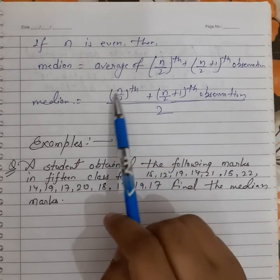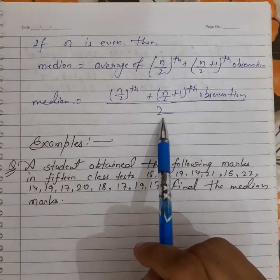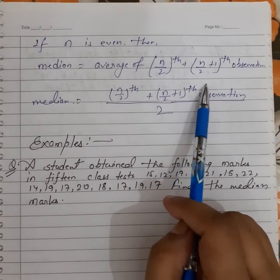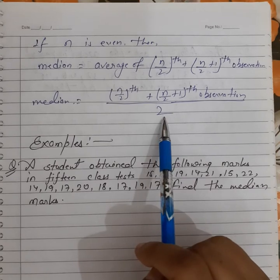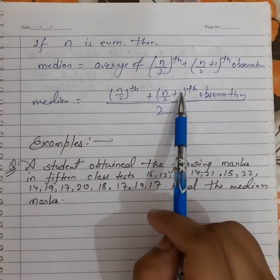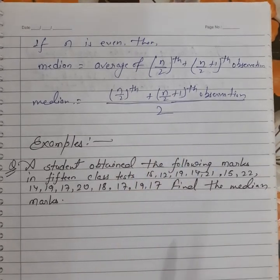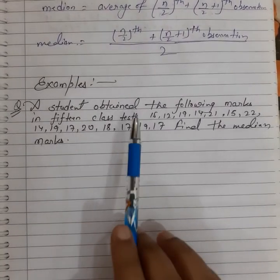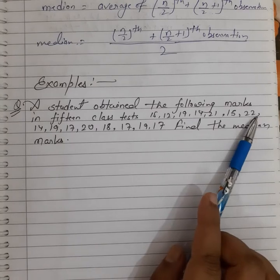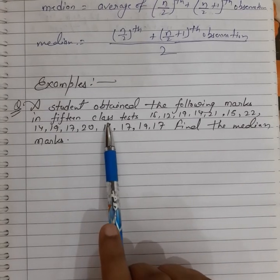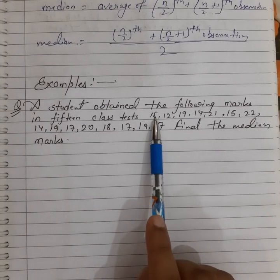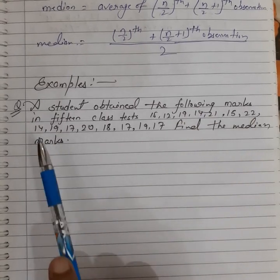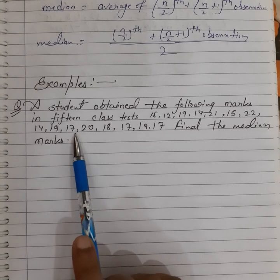So median equals [(n/2)th observation + (n/2 + 1)th observation] divided by 2. This is the average — the sum of those two observations divided by 2, because there are 2 observations. Now we have one example: a student obtained the following marks in 15 class tests: 15, 12, 19, 14, 21, 15, 22, 14, 19, 17.